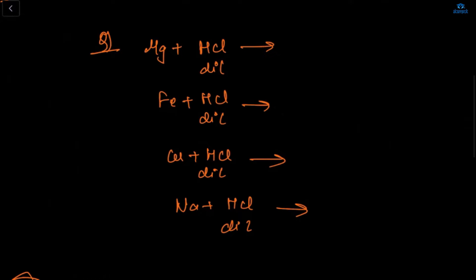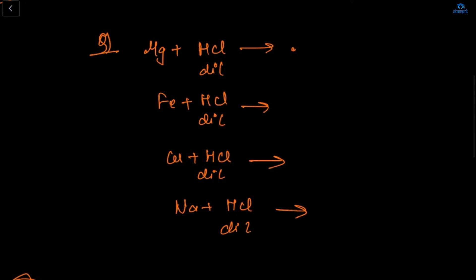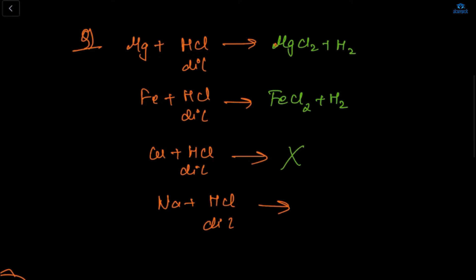Magnesium with dilute hydrochloric acid gives MgCl₂ plus H₂. With iron you get FeCl₂ plus hydrogen — it's FeCl₂, not FeCl₃. With copper: copper is below hydrogen, so no reaction producing H₂.